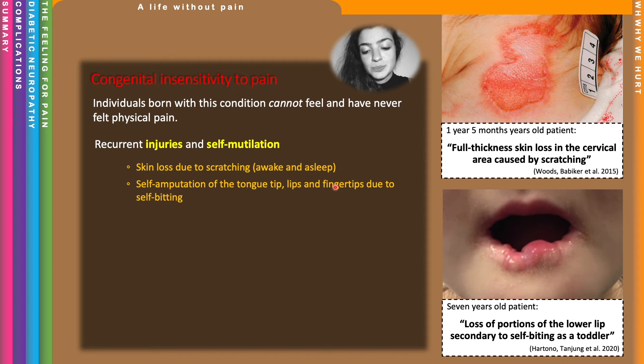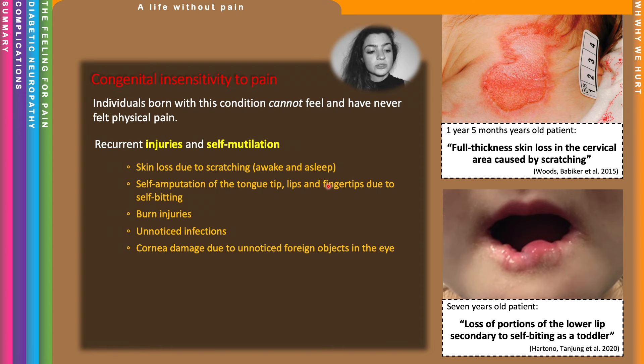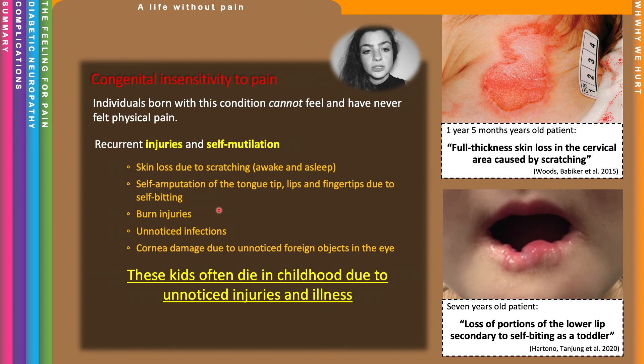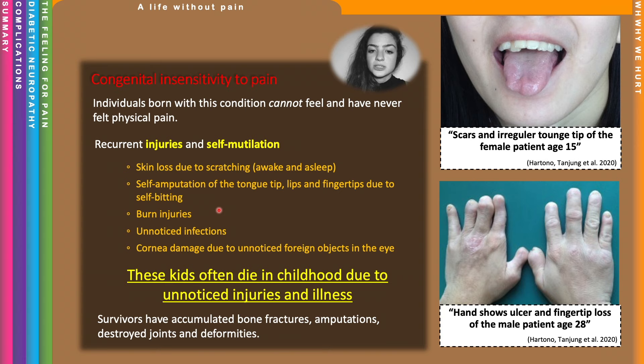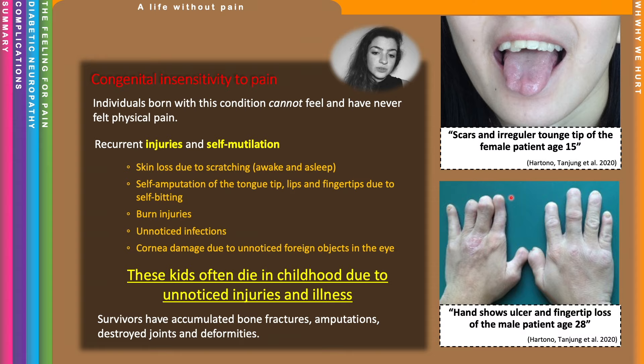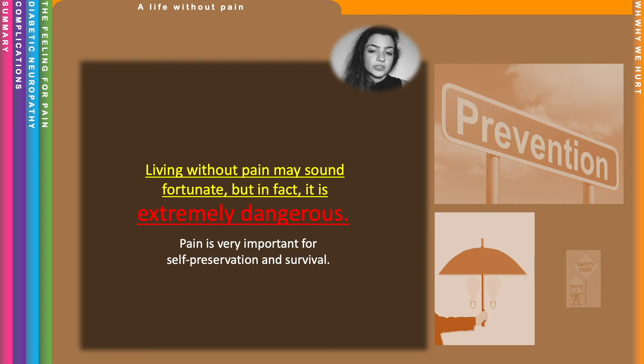Other common injuries include bone injuries, infections, and damage to the eyes due to foreign objects that go unnoticed. These children often die in childhood due to injuries, illness and infections, and those who make it to adulthood have accumulated many deformities, amputations and fractures. For example, here's a patient age 15 with loss of tongue tip, and another age 27 with loss of fingertips. Living without pain is extremely dangerous — pain is very important for self-preservation and survival.